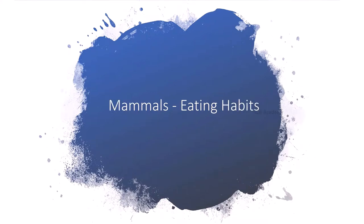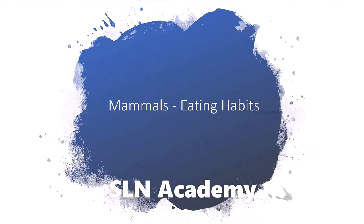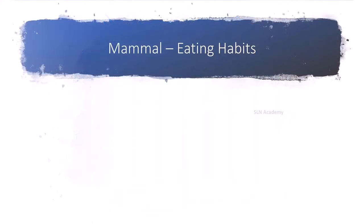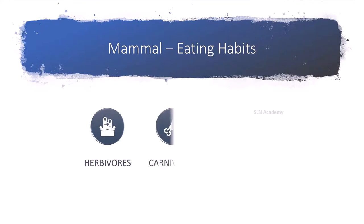Mammals and their eating habits. Based on the eating habits, mammals can be divided into three groups. They are: Herbivores, Carnivores, and Omnivores.